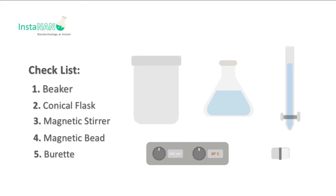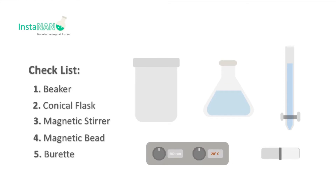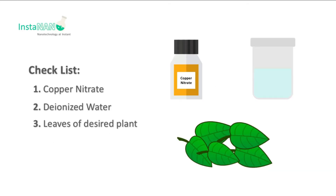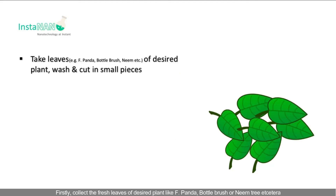Here is the apparatus checklist: we need a beaker, conical flask, magnetic stirrer, magnetic bead, and burette. The chemical checklist includes copper nitrate, deionized water, and leaves of a desired plant. Firstly, collect the fresh leaves of a desired plant such as ficus, panda, bottle brush, or neem tree.